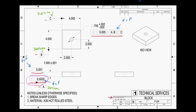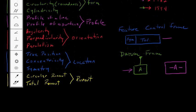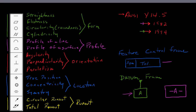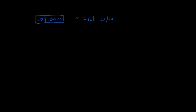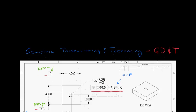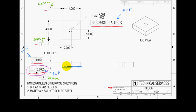Let's take the easy one first — flatness. The symbol for flatness looks like a parallelogram. So you have a feature control frame with the flatness symbol and a number — in this case 0.0005, or half a thousandth of an inch. We read that as: that surface that the feature control frame is applied to has to be flat within 0.0005 inches. So the bottom surface of this plate has to be flat within a half thousandth of an inch.